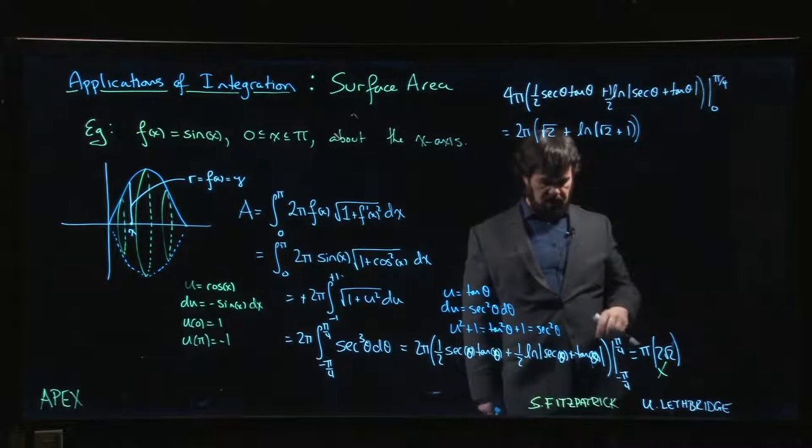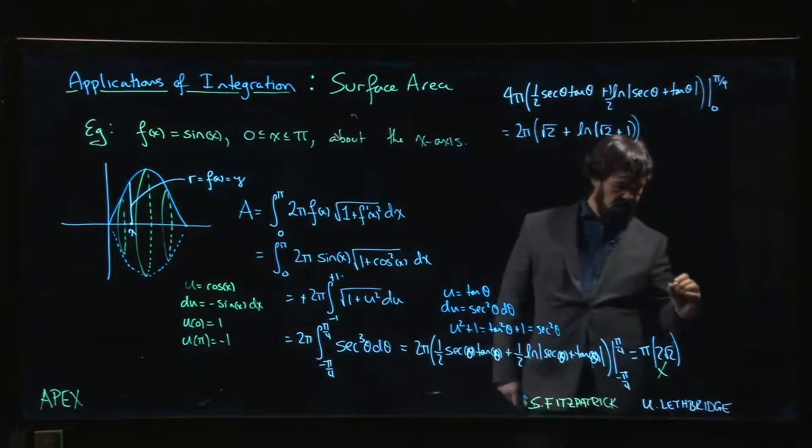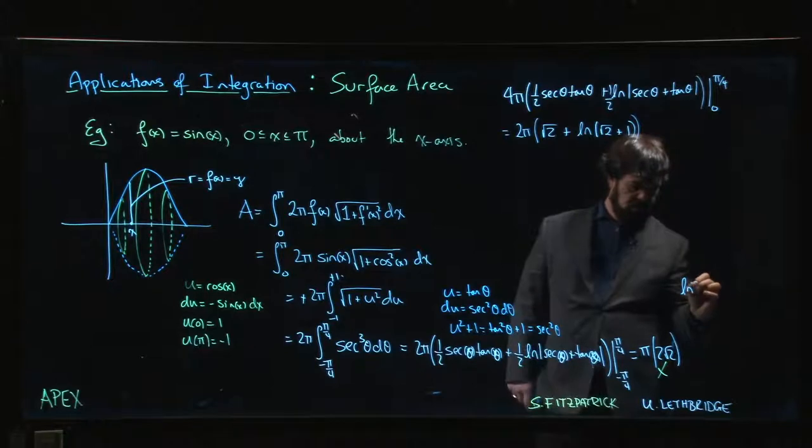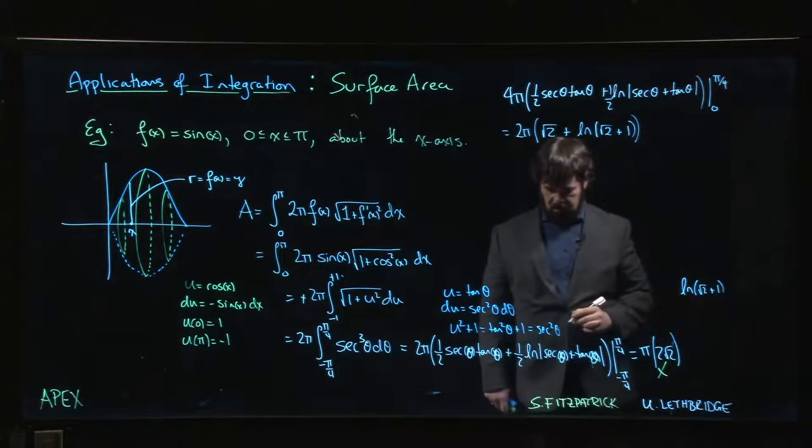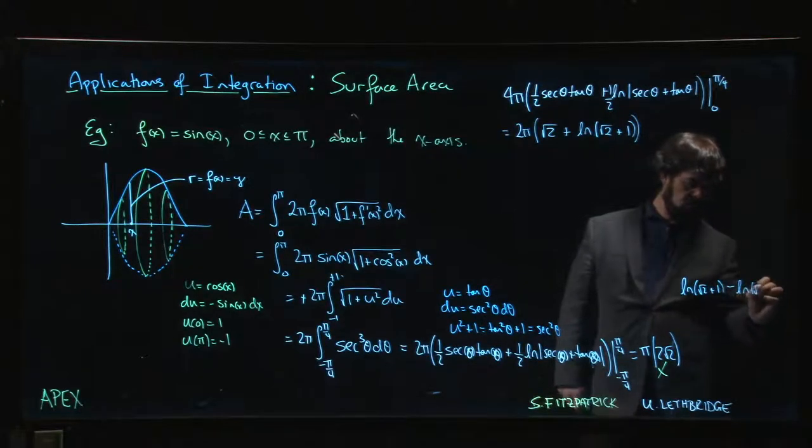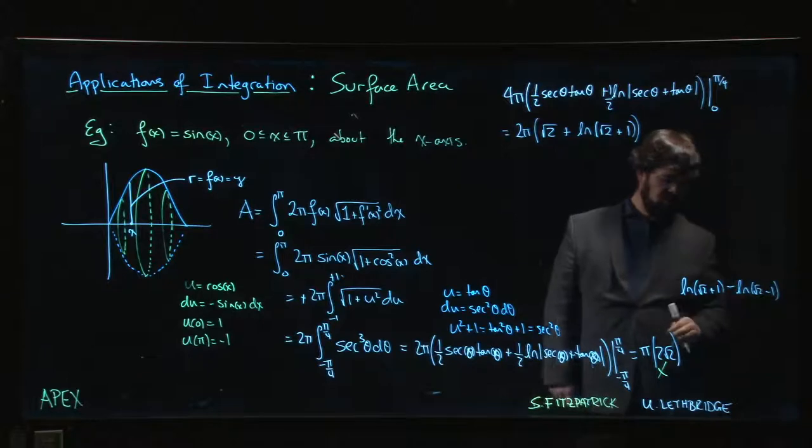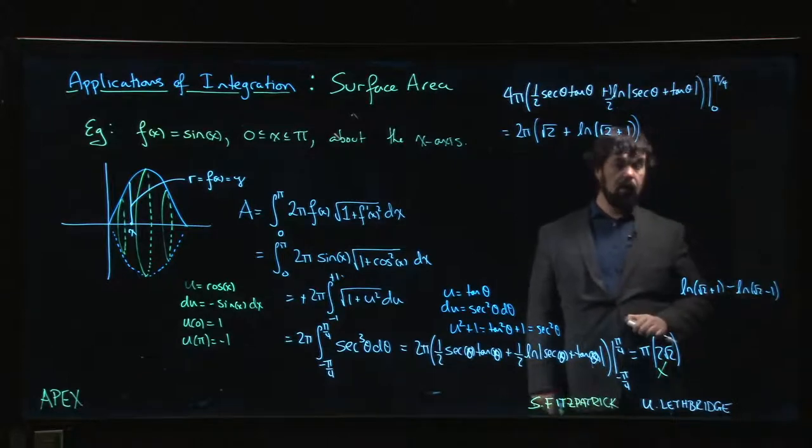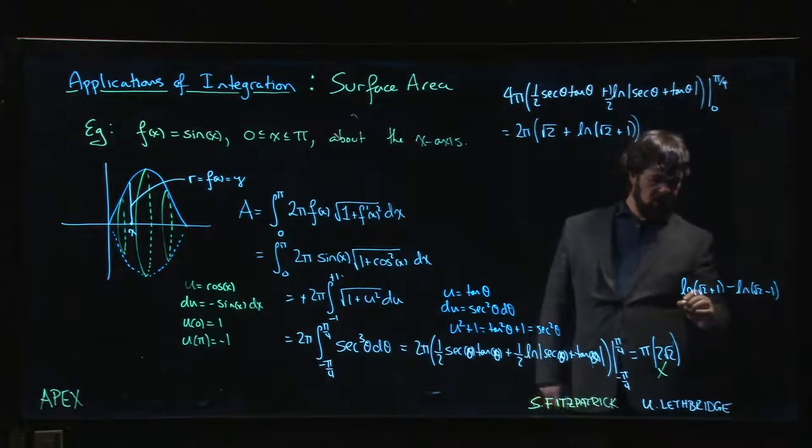What you'd have to do is for the upper limit you'd have root two plus one, then you'd have to subtract off the lower limit which gives you root two minus one, because secant is even but tan is odd so you get a sign change.